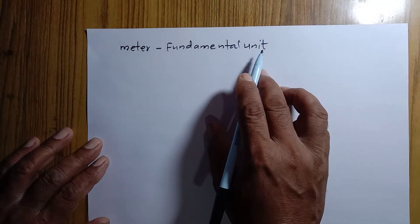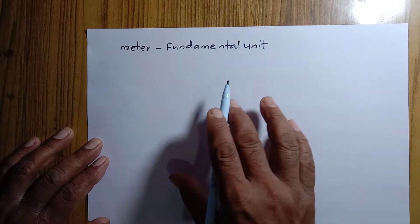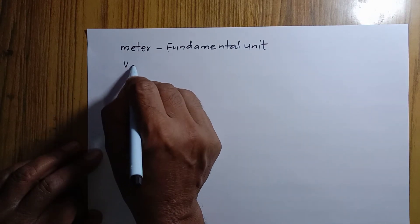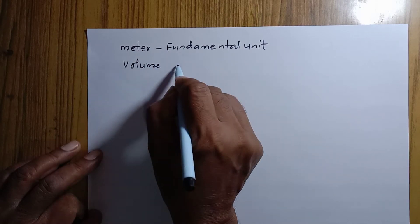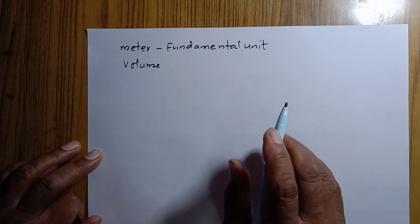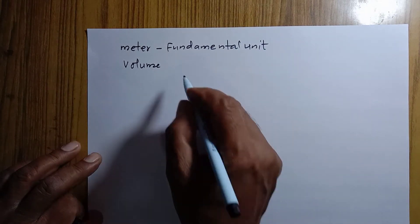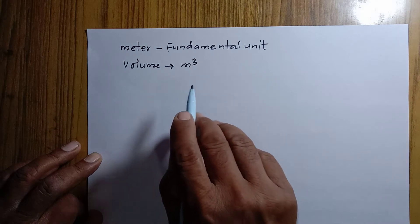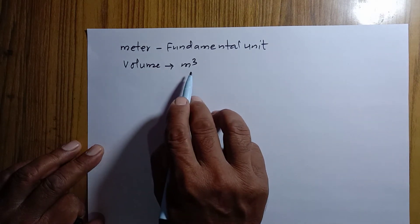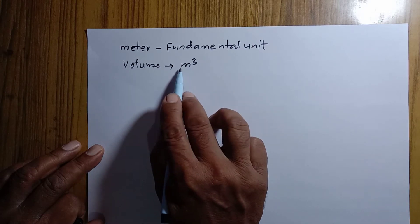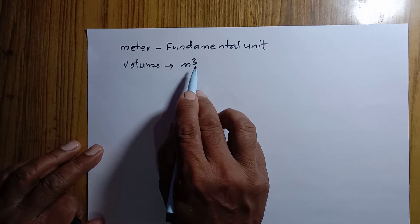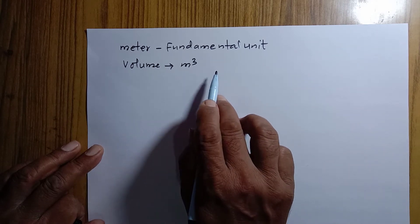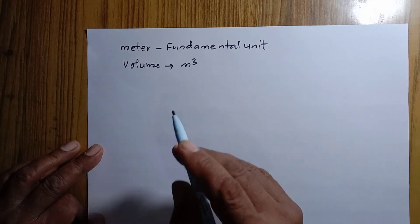In the same way, you can be asked: how can we say that volume is a derived unit? The SI unit of volume is cubic meter, that is meter cubed. The fundamental unit meter is used three times here. Since a unit that is made by using fundamental units is called a derived unit, therefore the unit of volume is a derived unit.